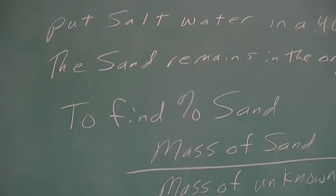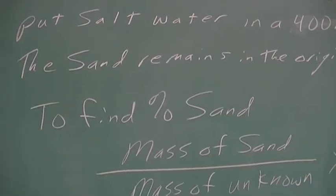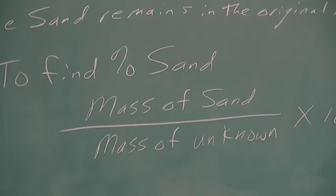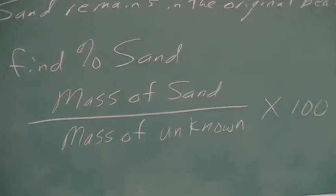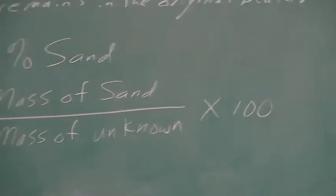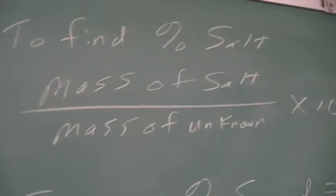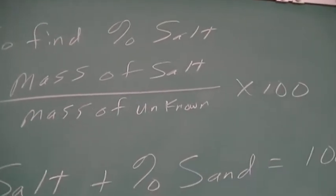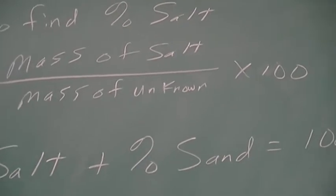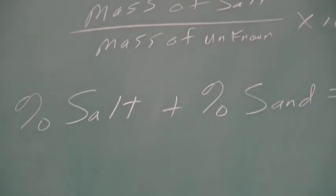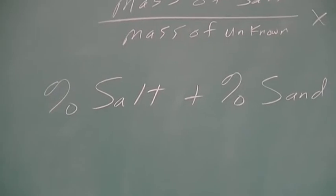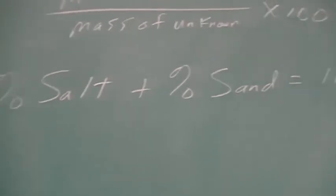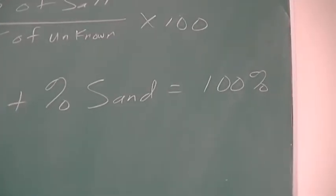In order to find our percent sand in this unknown mixture of sand and salt, we take the mass of sand, divide by the mass of the unknown, and multiply by 100. To find the percent salt, we take the mass of salt, divide by the mass of the unknown, times 100. And since there is only sand and salt in this mixture, the percent sand plus the percent salt, when you add these percentages together, they will equal 100%.